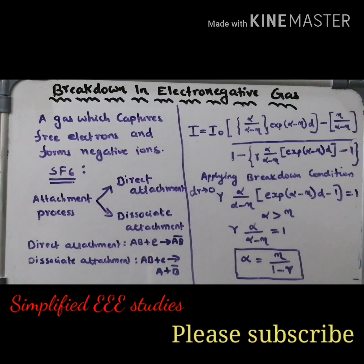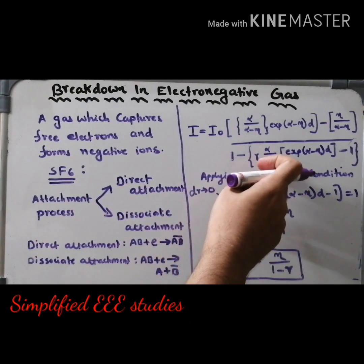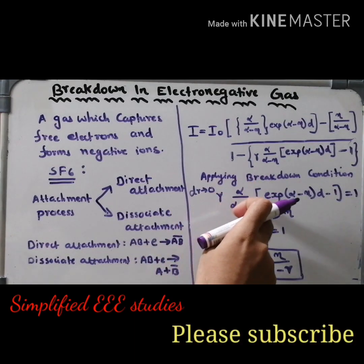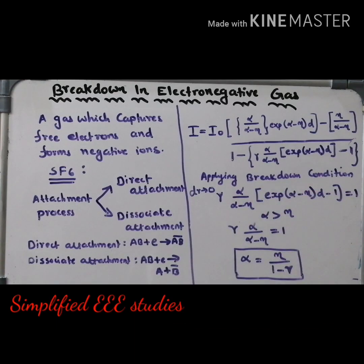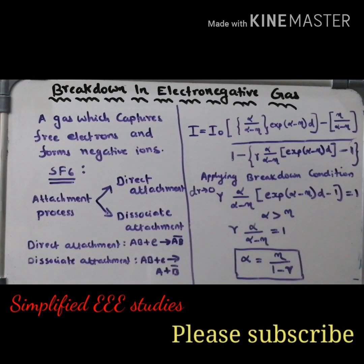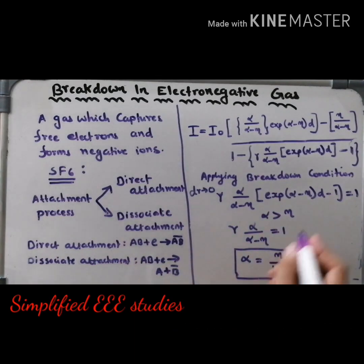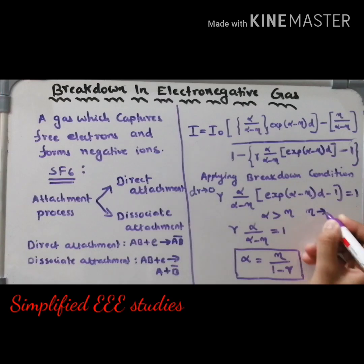By equating the denominator part to zero, the equation can be rewritten as: γ into α divided by (α − η) into exponential (α − η)d minus 1, equal to 1. Where η is known as the attachment coefficient. The attachment coefficient η is only applicable in the case of electronegative gas.